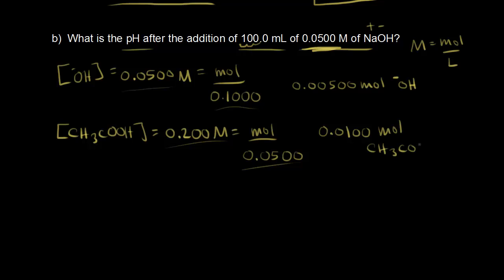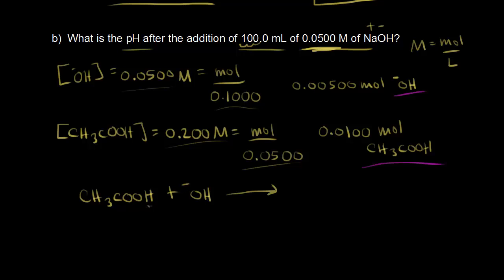We have an acid and a base: acetic acid and hydroxide ions. The hydroxide ions neutralize the acid in a neutralization reaction. Hydroxide takes the acidic proton from acetic acid — OH⁻ and H⁺ form H₂O — leaving the conjugate base, the acetate ion CH₃COO⁻.